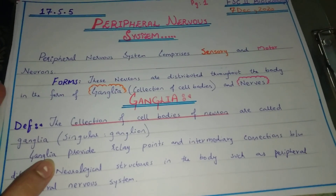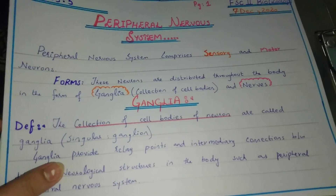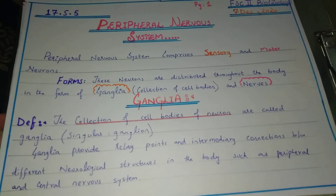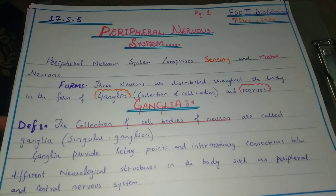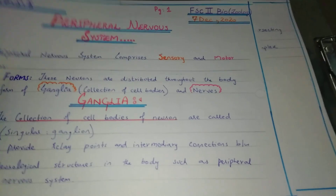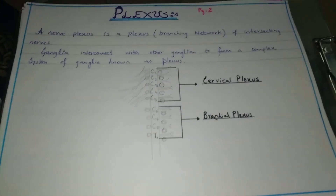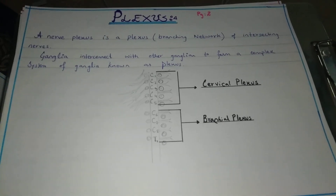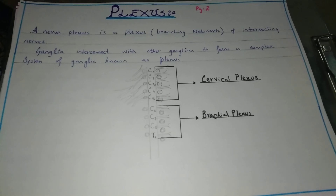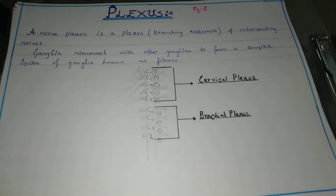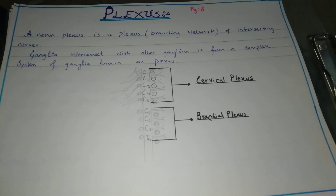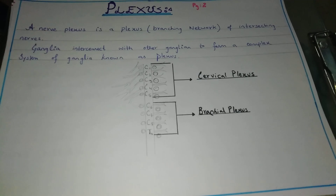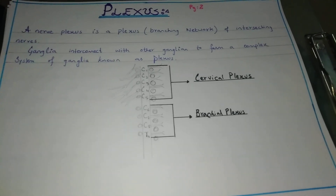The ganglia body is part of the central nervous system, but this body is not part of the central nervous system — it is however necessary to connect these systems. Now, what is a plexus? A nerve plexus is a branching network of intersecting nerves. The ganglia interconnect with other ganglia to form a complex system, which is known as a plexus.